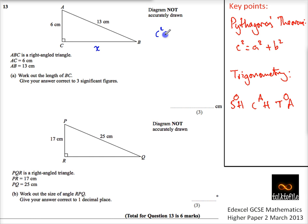So, if I know that c squared is a squared plus b squared, then in my case, this is my hypotenuse. So, I know that 13 squared is 6 squared plus x squared. Fantastic. So, that tells me that x squared is 13 squared minus 6 squared.